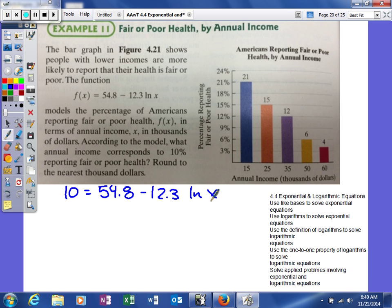So first thing we can do is move this 54.8 to the other side. So we'll subtract it. And that should give me negative 44.8 is equal to negative 12.3 natural log of x.